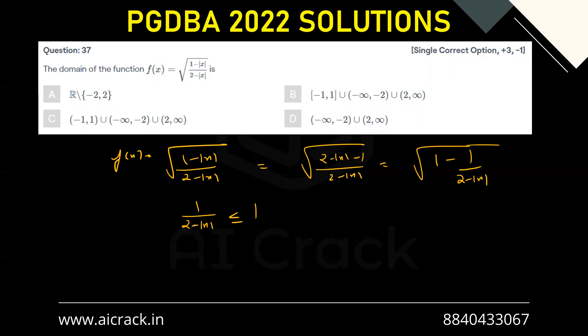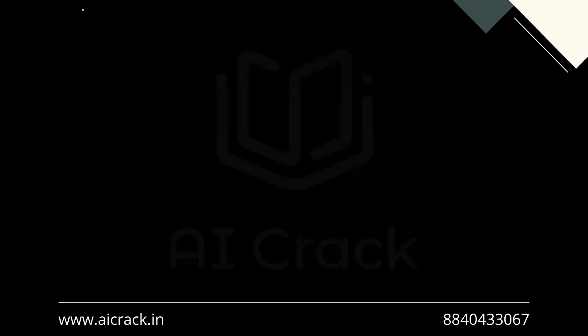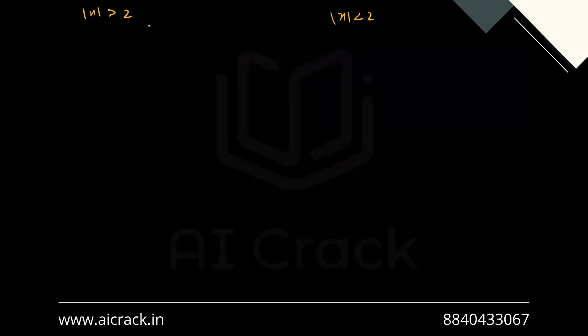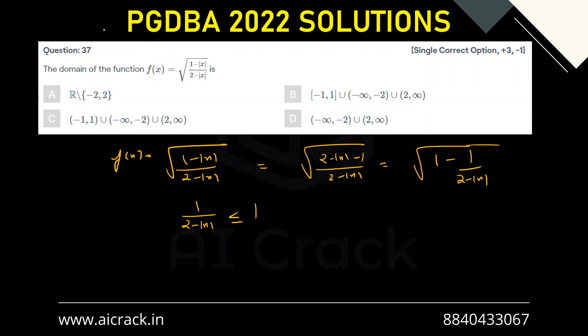We don't really know if this is a positive or negative number — it depends on the value of x. So we'll have two cases. The first case is |x| greater than 2, and the other case is |x| less than 2. We cannot have equality because 2 minus |x| cannot be 0 since it's in the denominator.